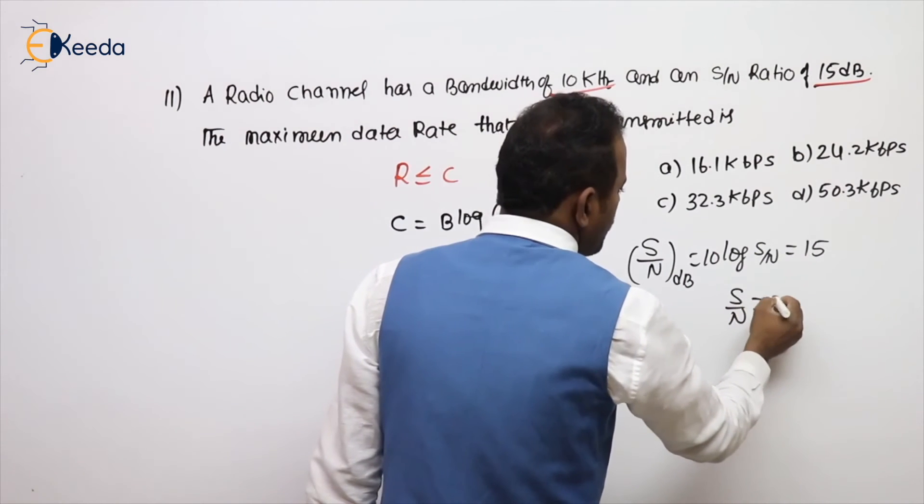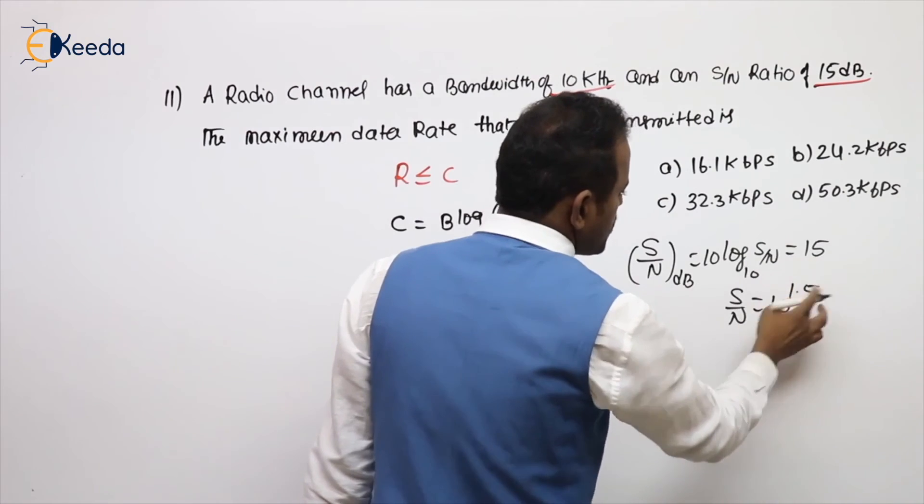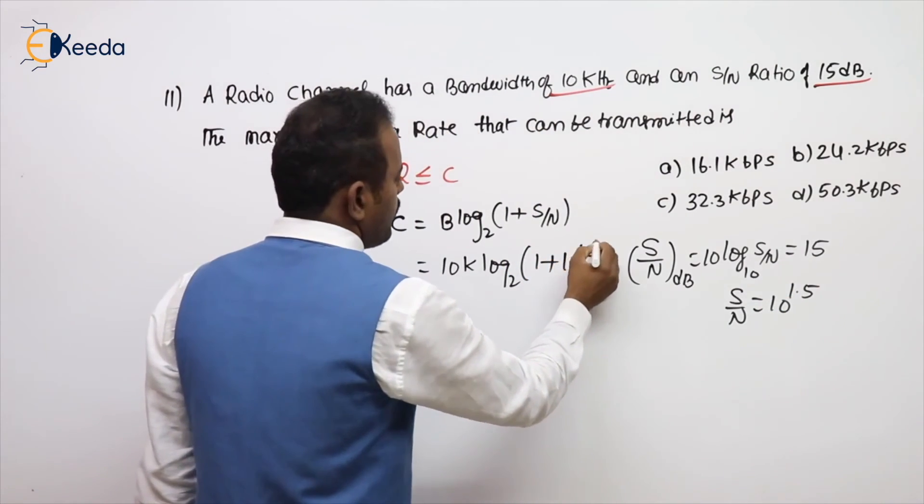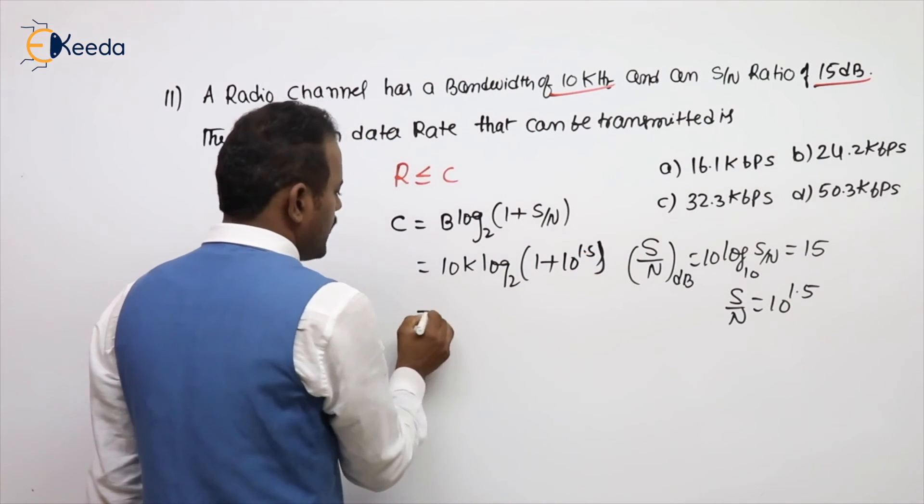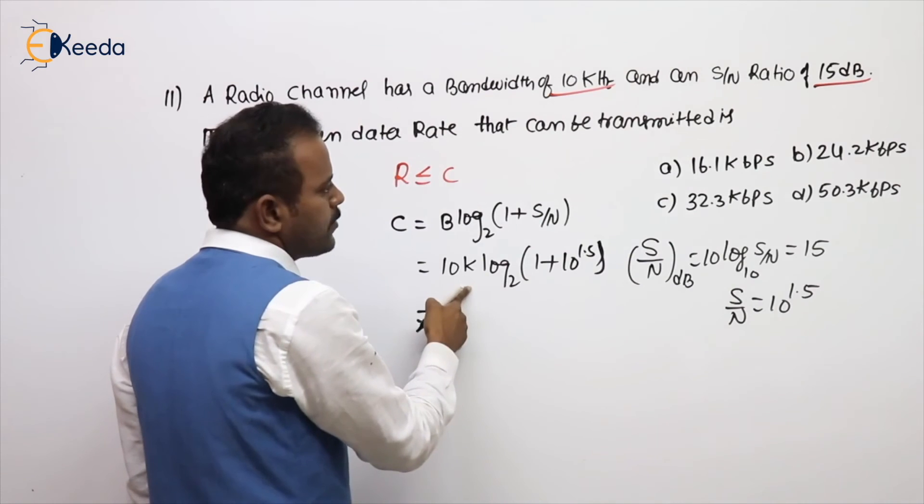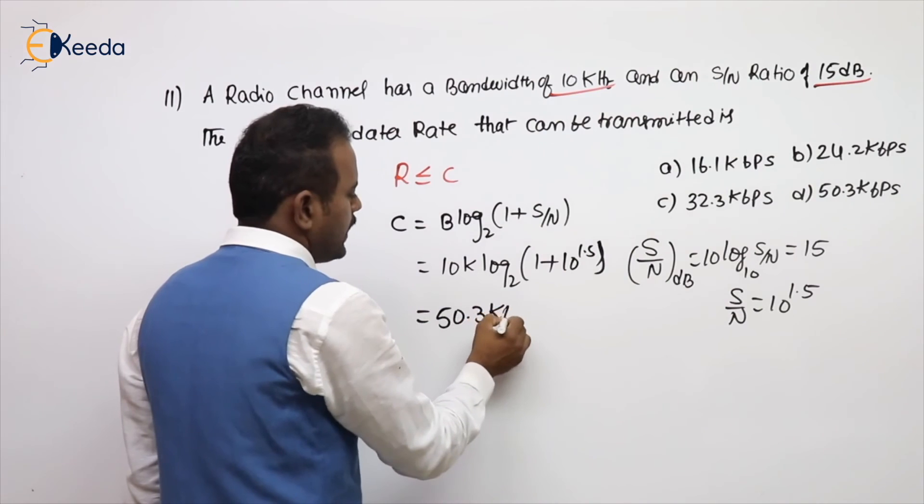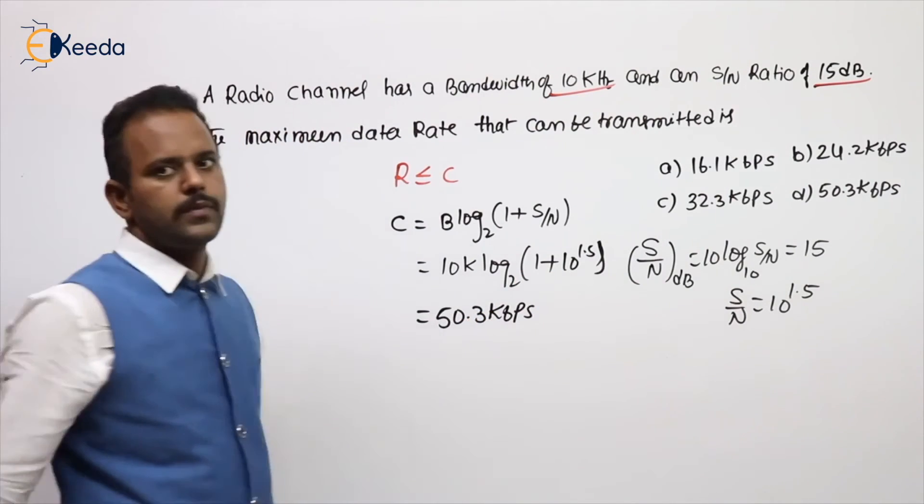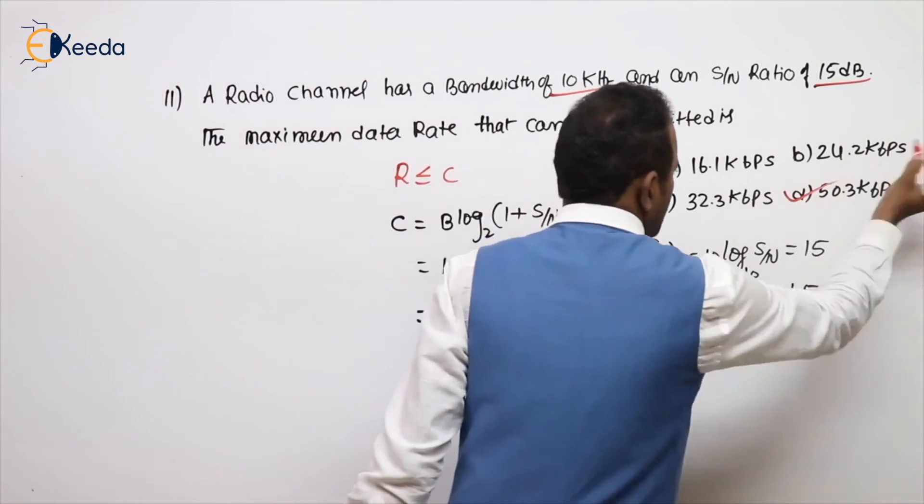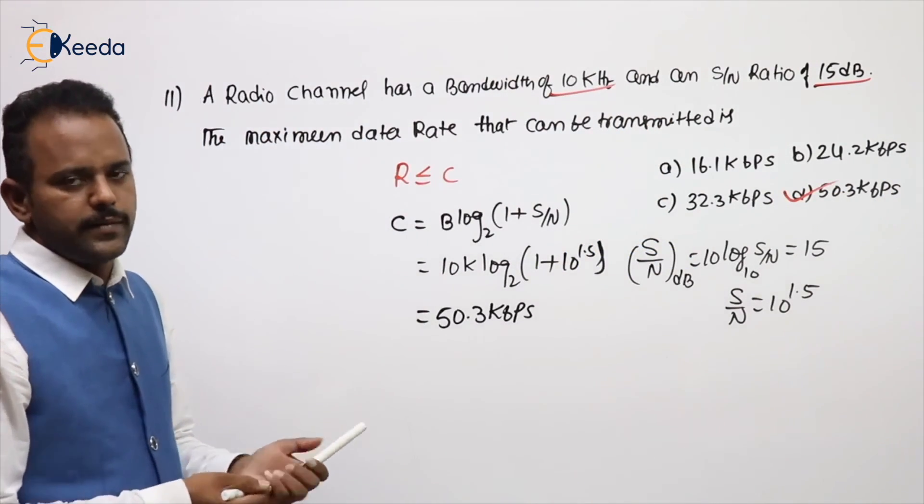What is the signal to noise ratio in decibel? It is nothing but 10 log S/N which is nothing but 15. So what is S/N value? 10 power, because here base is 10. This comes this side, so 10 power 1.5. Calculate, if it is 5k we already seen the problem, 25 is approximately coming. 10k means some 50.3 kbps will come. You can see option D, the problem on channel capacity.